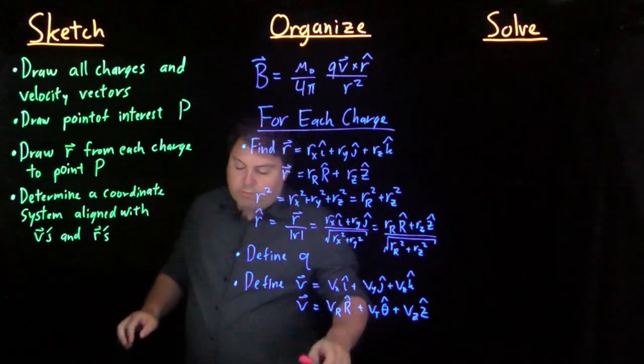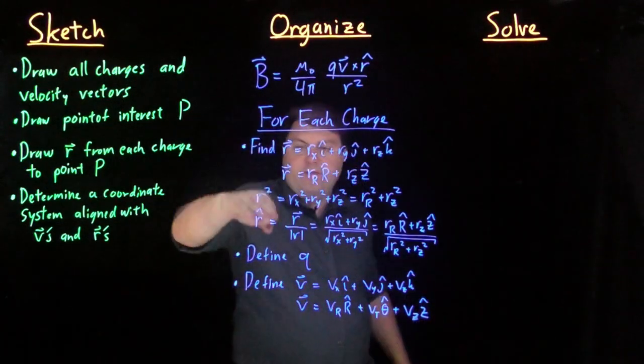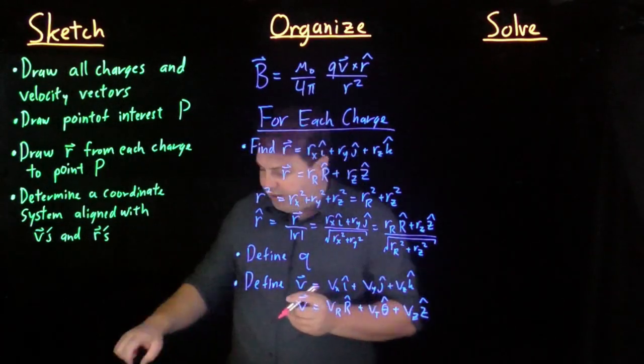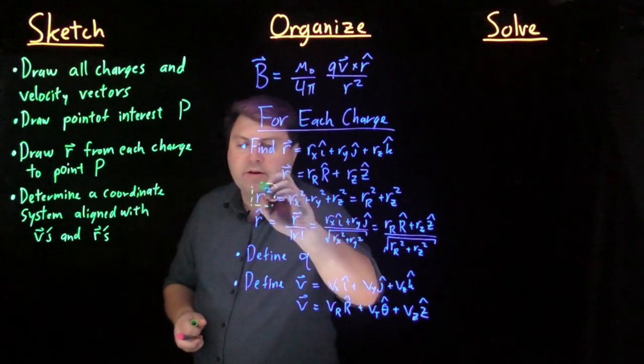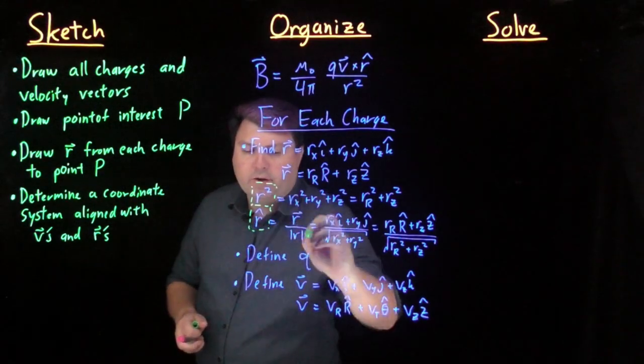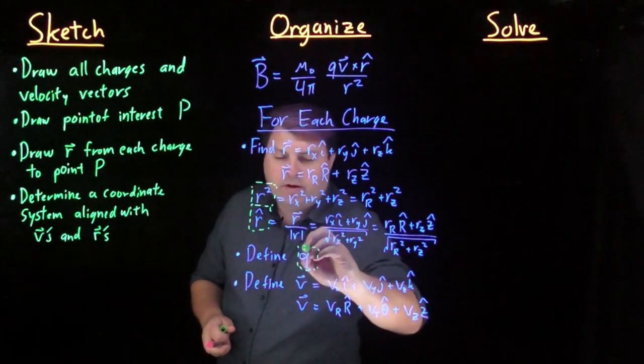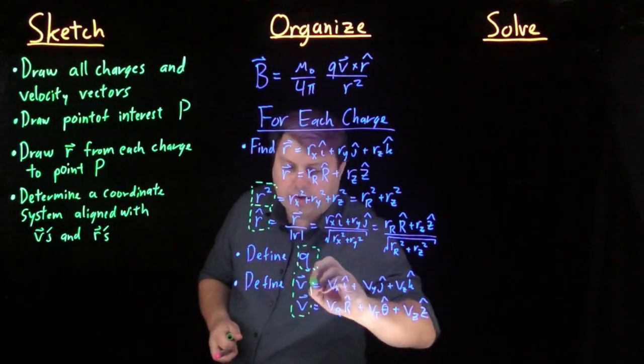So what we then want is to have this for each charge, have this for each term. So then when we have this we have r squared, we have r hat, we have q, and we have one definition or another of v.